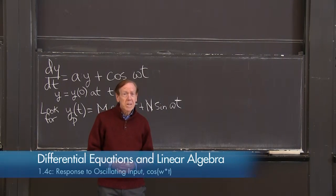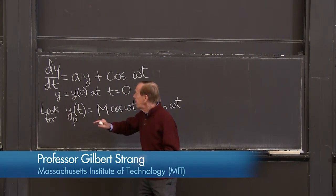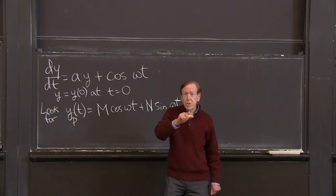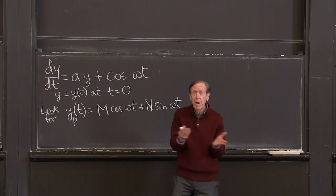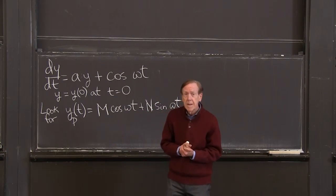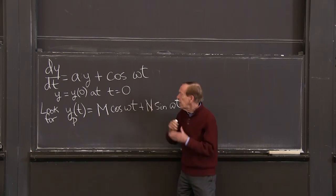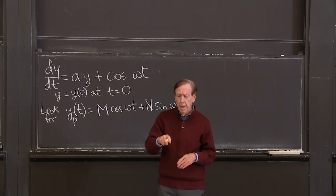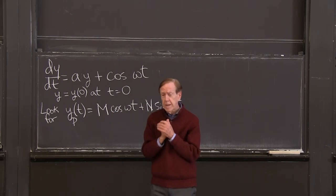This is the next step for a first order differential equation. Instead of an exponential, now we have an oscillating function. Exponentials, from the previous lecture, grew or decayed. Now we have oscillation — we have AC, alternating current, in this problem. Instead of real exponentials, we have oscillation, vibration, all the applications that involve circular motion, going around and around instead of going off exponentially.